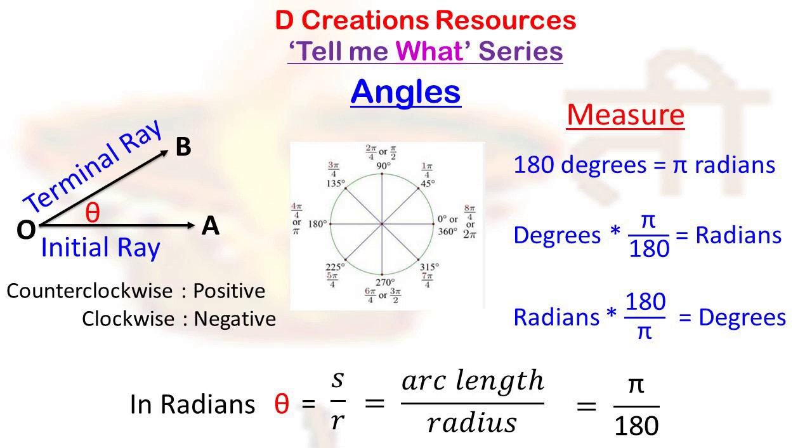So a radian is the measure of the central angle subtended by an arc equal in length to the radius of the circle.